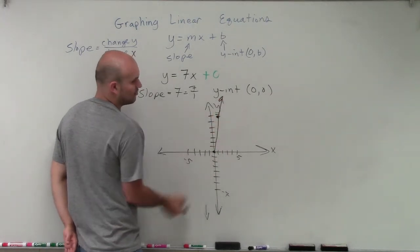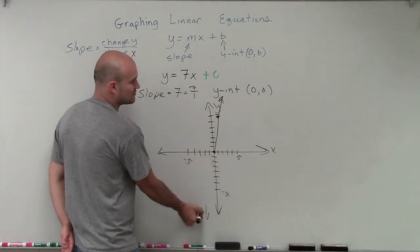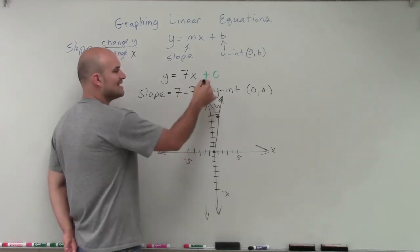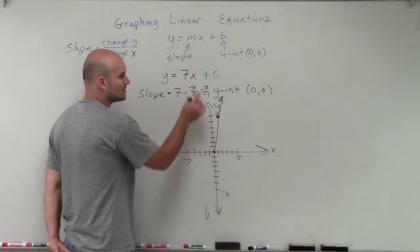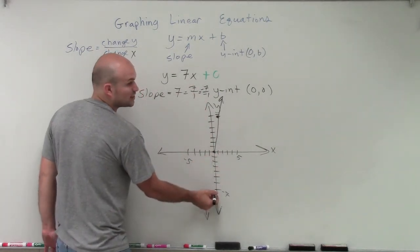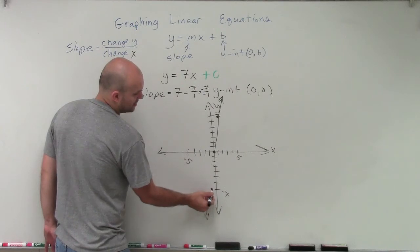I can now connect those two points. If I wanted to go down in this negative direction, I could rewrite this as negative 7 over negative 1. Because negative 7 divided by negative 1 still gives you a positive 7. So if my change in y is negative 7, I go down to negative 7. And if my change of x is negative 1, I go to the left one.